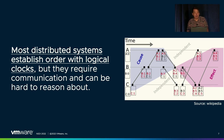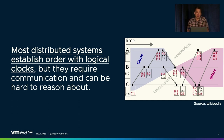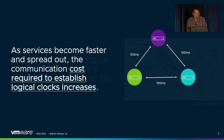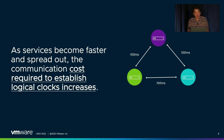Unlike wall clocks, logical clocks require multiple communication steps to establish and maintain. Moreover, modern optimizations can make logical clocks really hard to reason about. As services become faster and more geo-distributed, the cost of this communication increases.